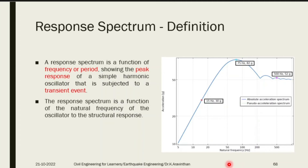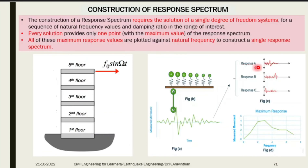When an earthquake occurs, scientists first identify the vibration that occurred. The x-axis of the seismometer record is time and the y-axis is displacement. When an earthquake strikes, the building vibrates and the seismometer plots this response graph. If you install a seismometer, the response will be plotted like this for each and every earthquake.